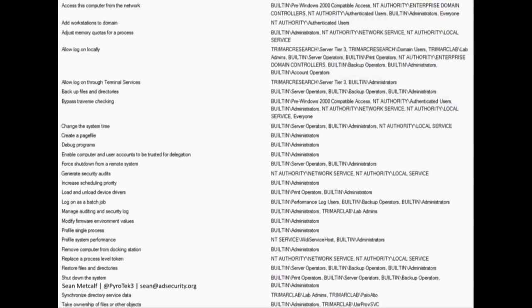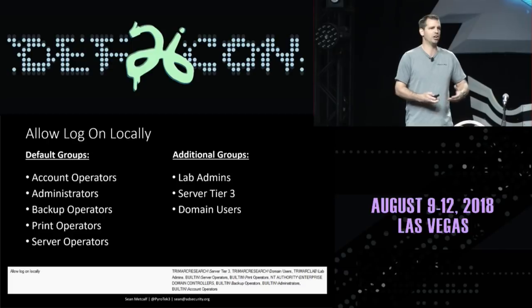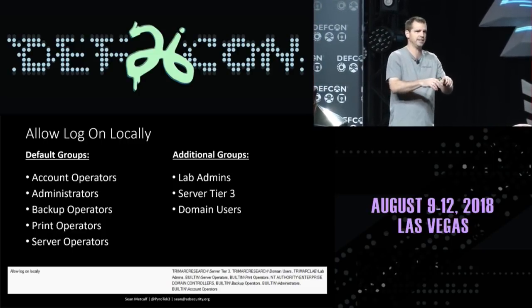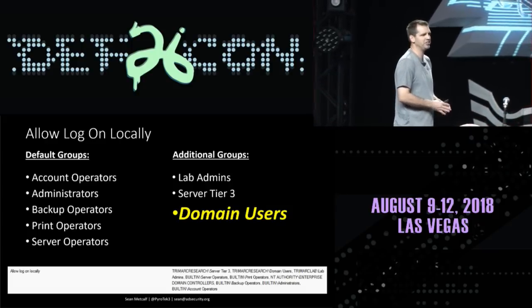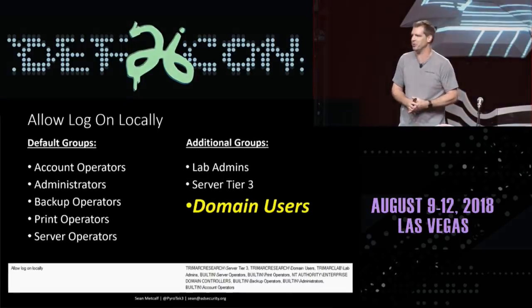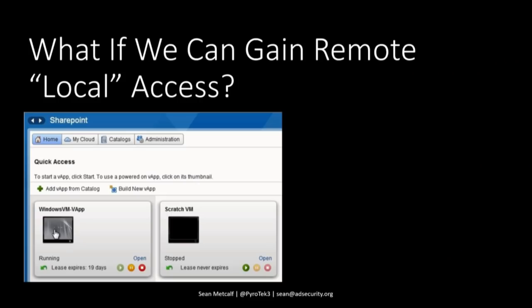Allow log on locally — when you apply this setting to a domain controller, you can log on locally to that domain controller. I have actually found this configured so that anybody can log on to a domain controller. But log on locally isn't always local — when we have a VM, we can use the remote console to connect into that VM's console and log on locally over the network. Physical servers also have ILO, which gives you out-of-band console access.